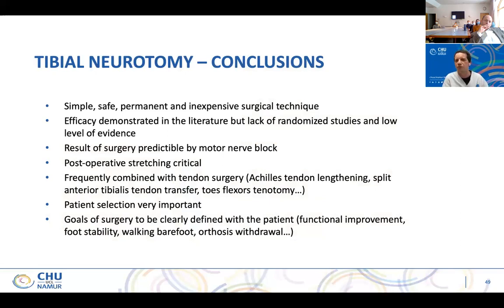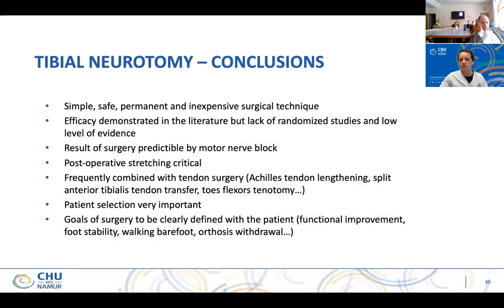Our conclusion is that neurotomy is simple — simple for a neurosurgeon who operates complex things — safe, permanent, and in Europe quite inexpensive. The efficacy is demonstrated in the literature even if we lack randomized controlled studies. The result of surgery is predictable by means of nerve block, and I have to promote this — it's really a magic technique. Neurotomy is frequently combined with tendon surgery: Achilles tendon lengthening, tibialis anterior tendon transfer, or toe flexor tenotomy. Patient selection is very important, and the goal of surgery has to be defined with the patient concretely — to walk barefoot, to decrease pain, to reduce or remove orthosis.